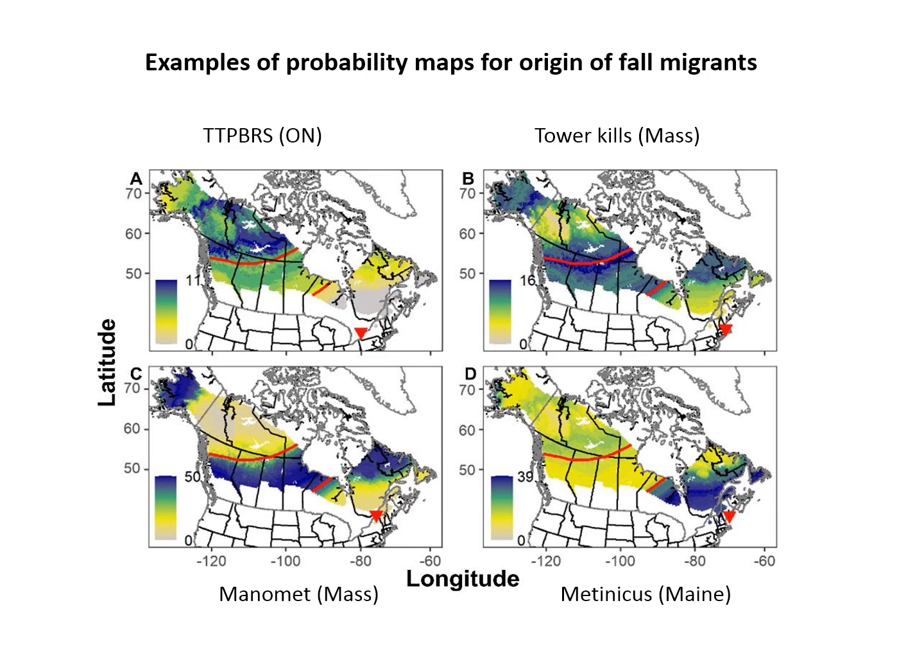The upper right and lower left maps are more ambiguous because the blue areas are spread across the country. Fortunately there weren't many distributions like this, and we found that wing length could help us separate birds likely from Alaska versus ones from the east. The lower right shows a map for the station that collects all its birds from the eastern region.